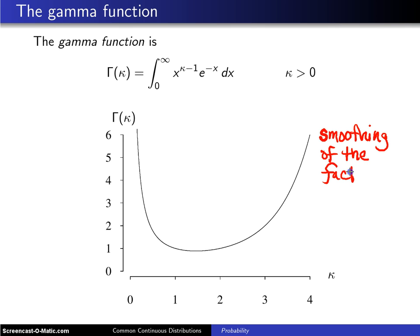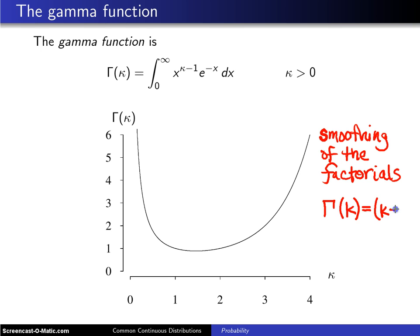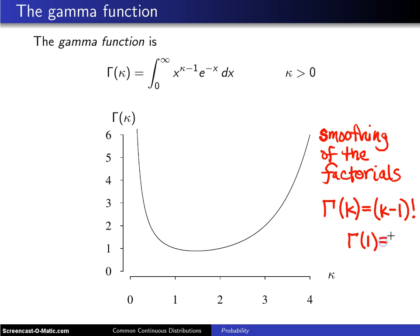Gamma of k — using k now rather than kappa — assuming that k is an integer, is equal to k minus 1 factorial. It would be a little more convenient if gamma of k was just k factorial, but tradition indicates that it is k minus 1 factorial. So if we want gamma of 1, that will be 0 factorial, which is 1.